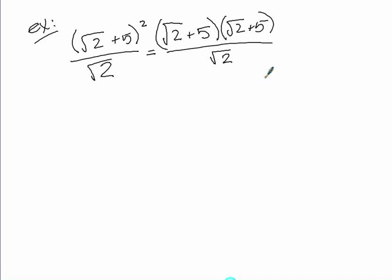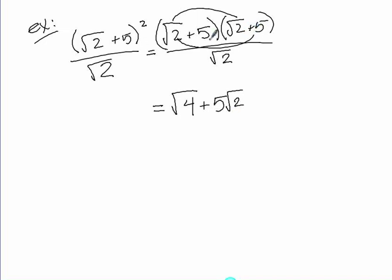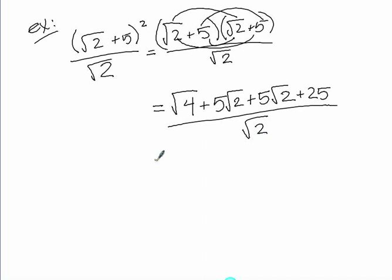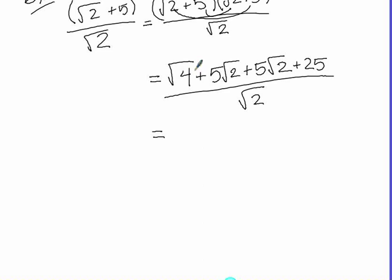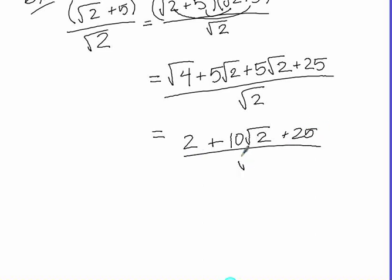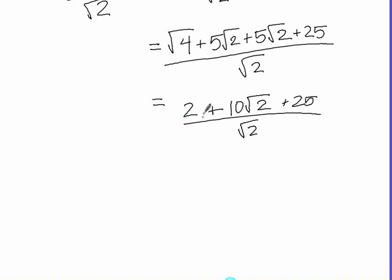To square something means to multiply it by itself: (√2 + 5)(√2 + 5) divided by √2. Using the FOIL method: √2 times √2 gives √4; √2 times 5 gives 5√2. Keep in mind — since 5 is not under a radical, we cannot combine it with the radical terms. Then 5 times √2 gives another 5√2, and 5 times 5 gives 25 — all still divided by √2.